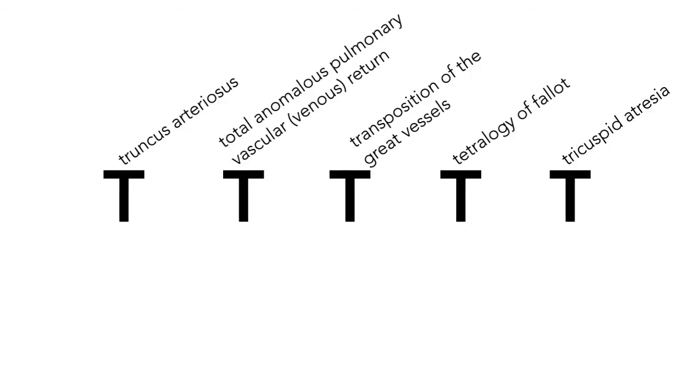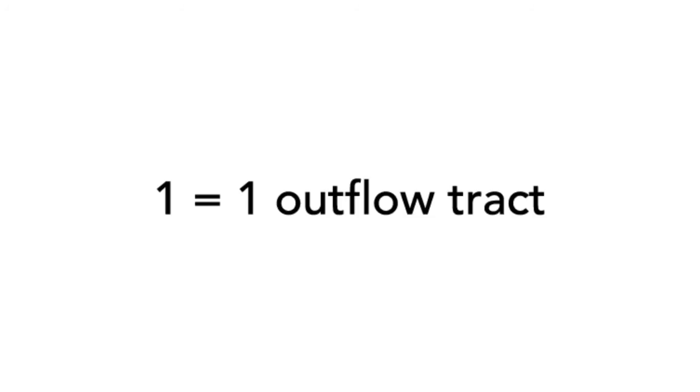The next thing to remember is that there are only five of these cyanotic congenital heart diseases, and the mnemonic follows the numbers 1, 2, 3, 4, and 5. Number one represents the great vessels joining to make one outflow tract in Truncus Arteriosus.